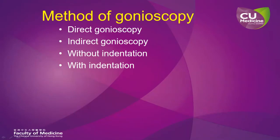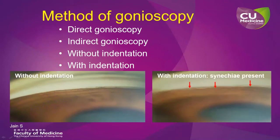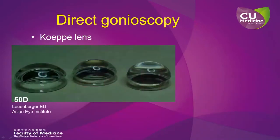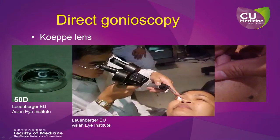The different methods of gonioscopy include direct gonioscopy and indirect gonioscopy, and it can be done without or with indentation. Direct gonioscopy has to be performed with a direct gonioscope, and the Koeppe lens is one of these examples. This lens has to be placed on the eye of the patient with the patient lying supine. Usually a separate light source has to be handheld to provide lighting, and a portable slit lamp has to be used to look through the direct gonioscope to have a panoramic view of the drainage angle.